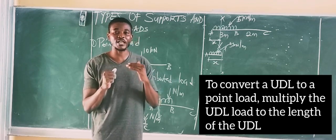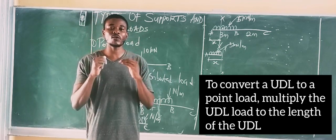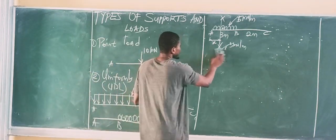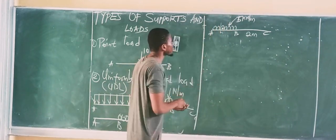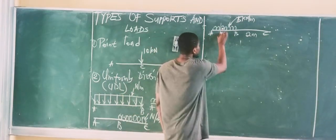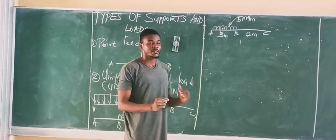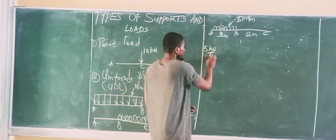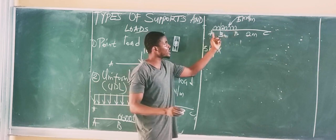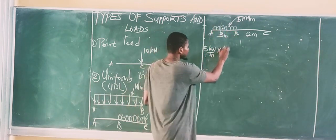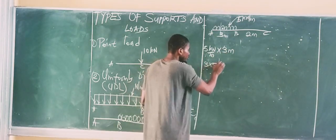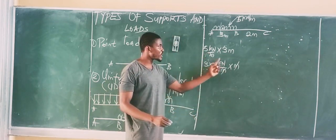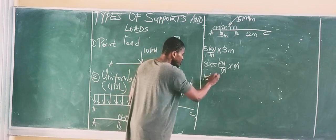To convert a UDL to a point load, simply multiply the intensity of the UDL by the length covered by the UDL. For example, if the UDL intensity is 5 kN per meter and the length is 3 meters, then 5 × 3 = 15 kN. This becomes the equivalent point load.